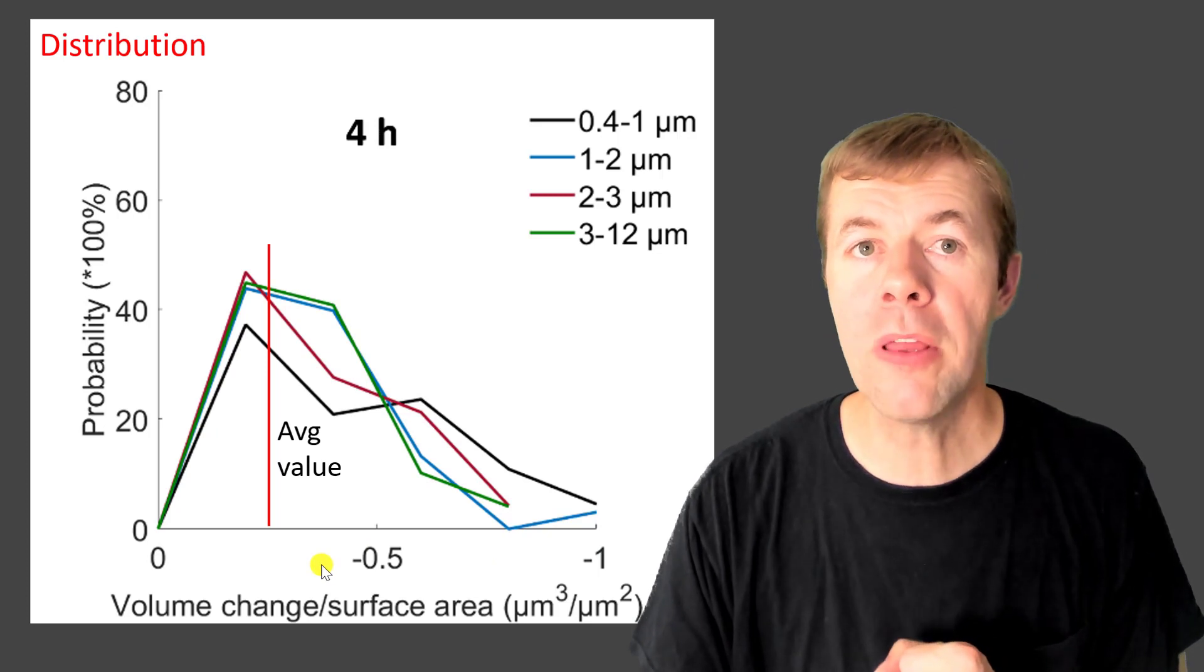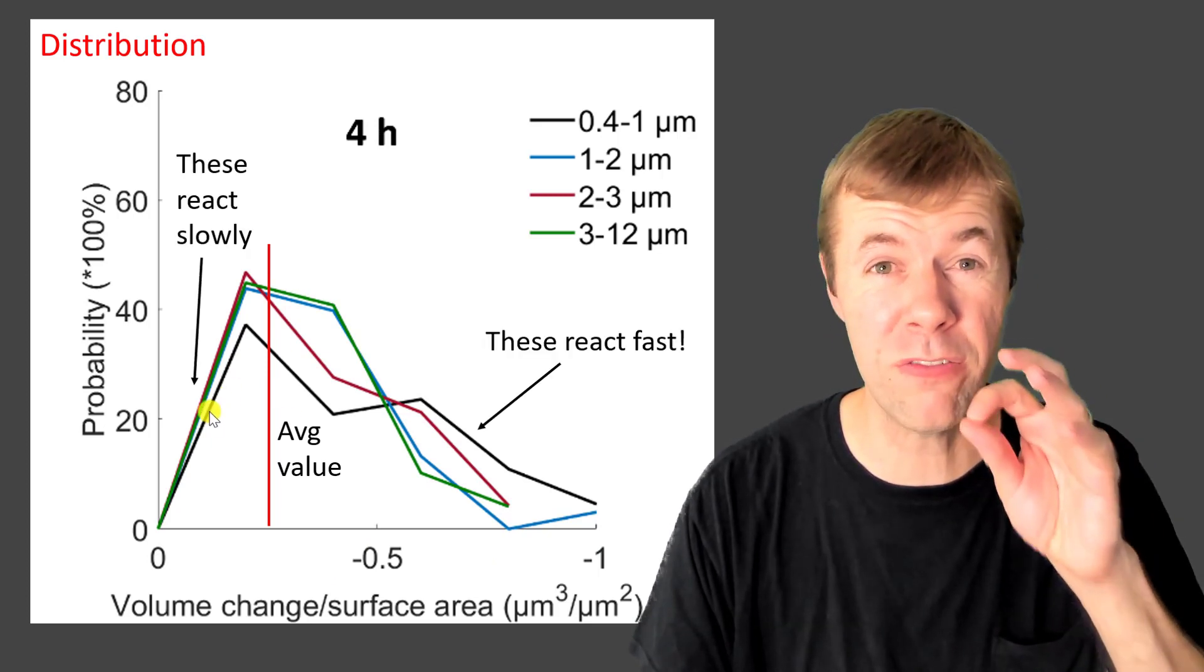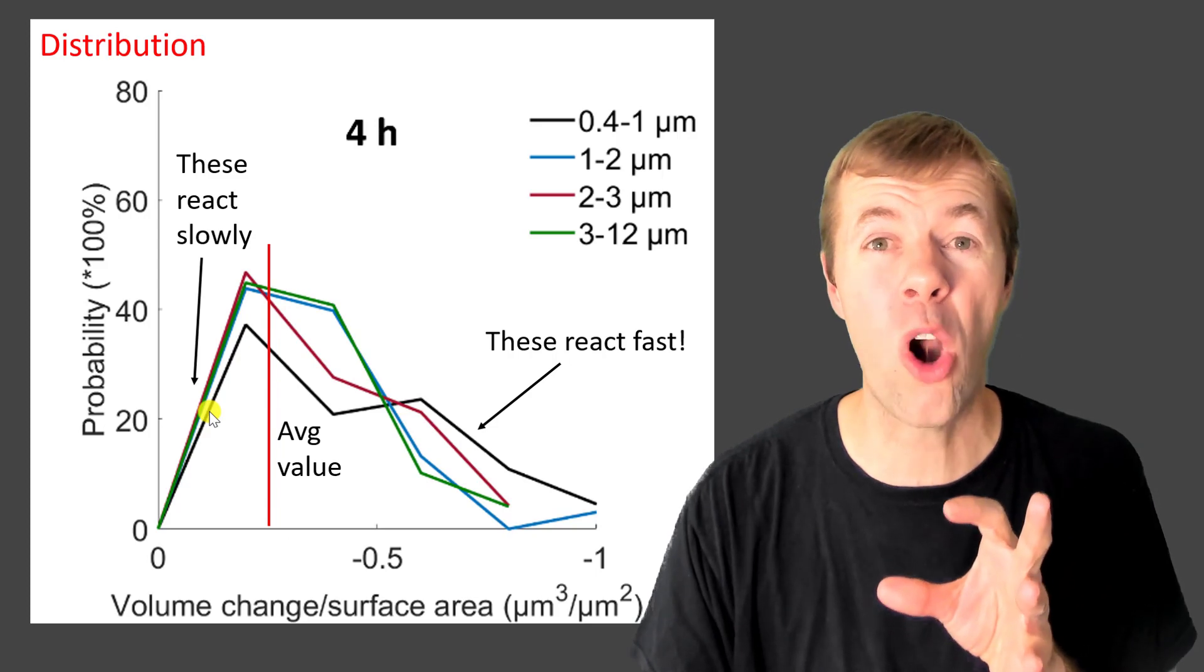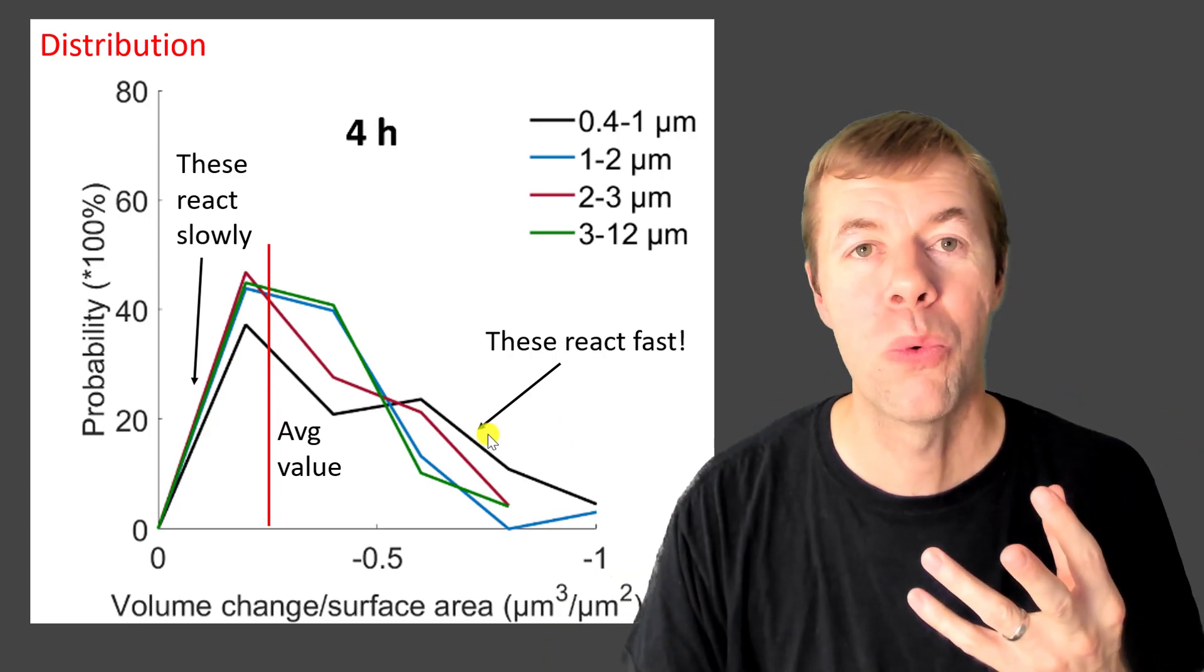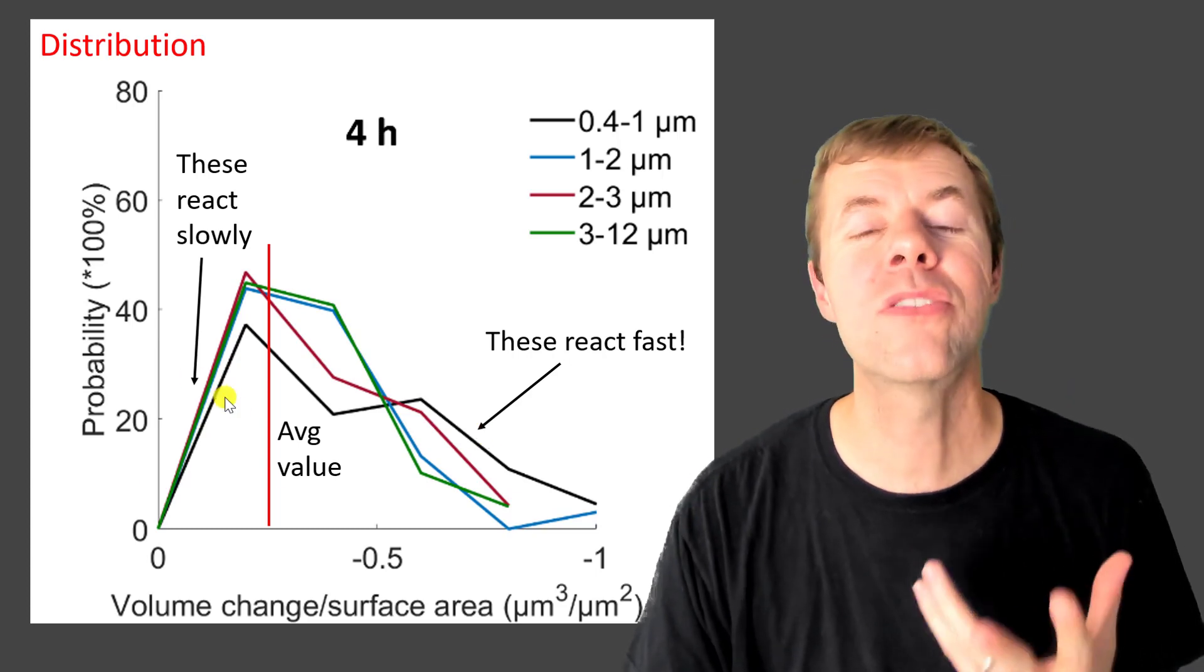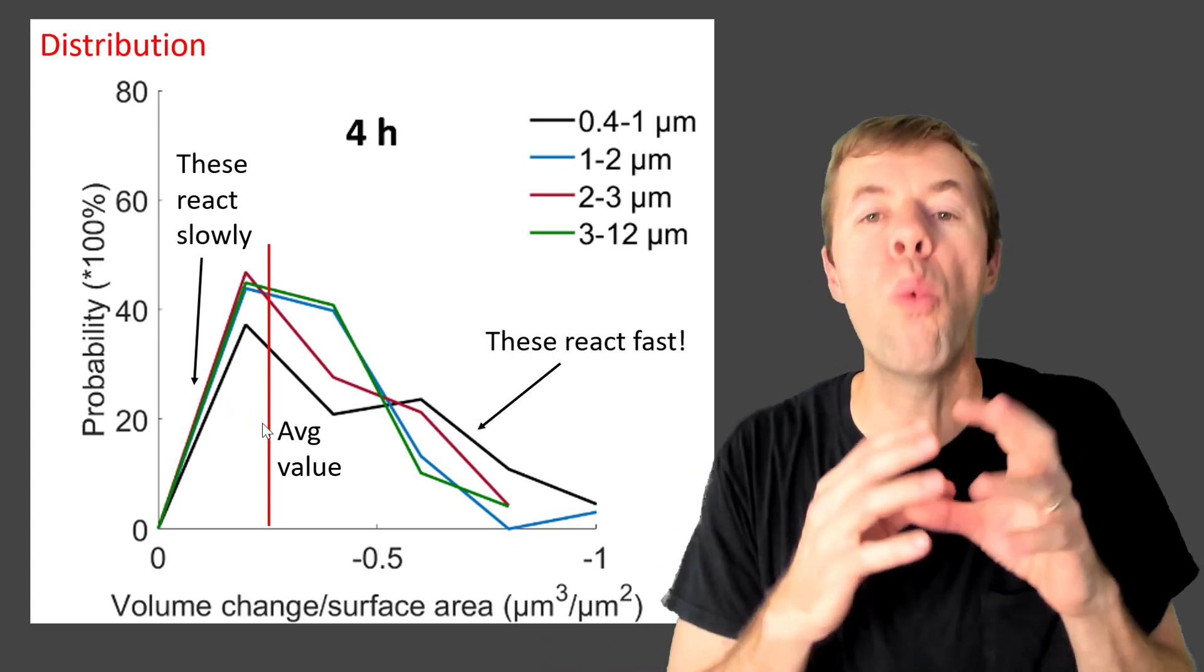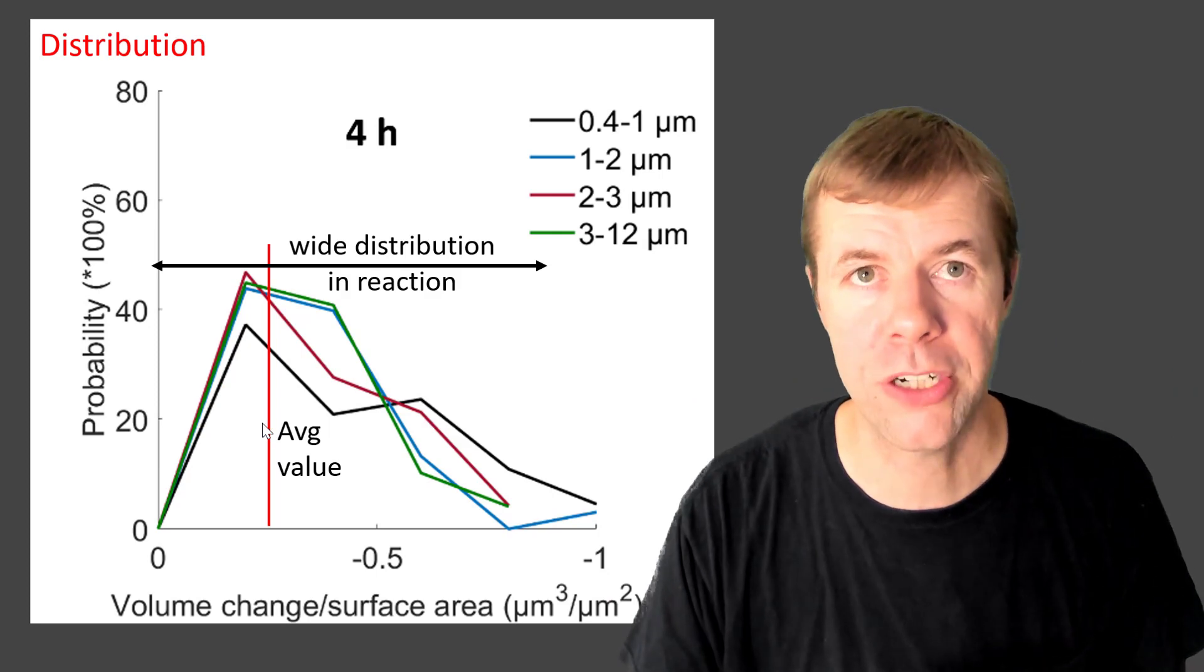So this means some of these particles are reacting very, very slowly. And some of these particles are reacting extremely fast. So averages, which are right here, they can sometimes be deceiving. And there's a wide distribution in the rate of reaction.